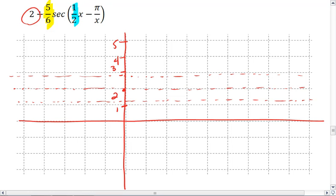Our period here we determine by taking 2 pi divided by 1 half which equals 2 pi times 2 over 1 which is 4 pi. We're going to have our period be 4 pi. It means half a period is 2 pi, a quarter of a period is pi.